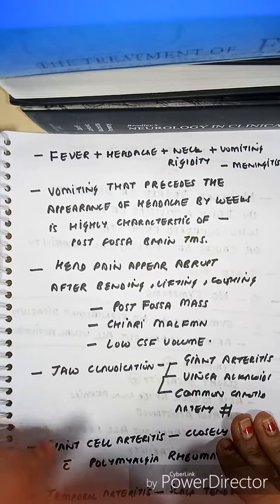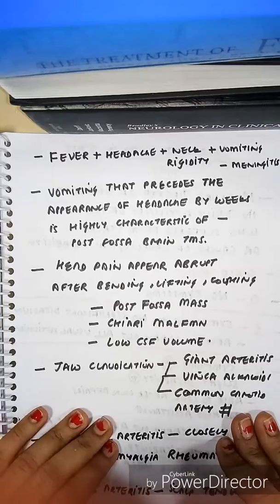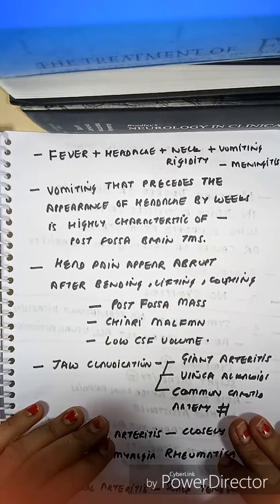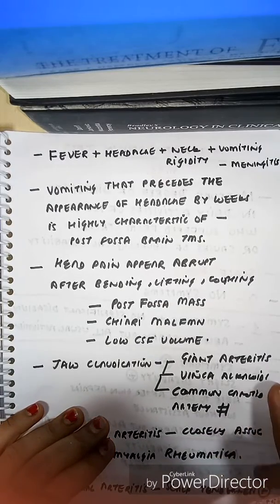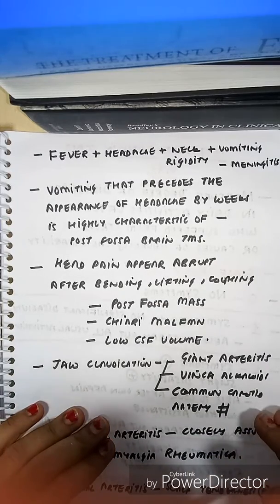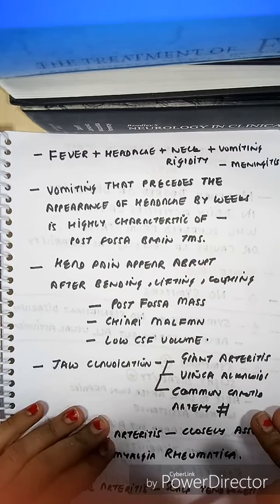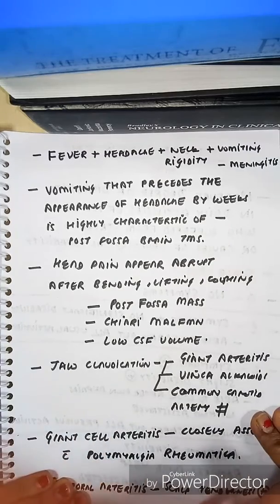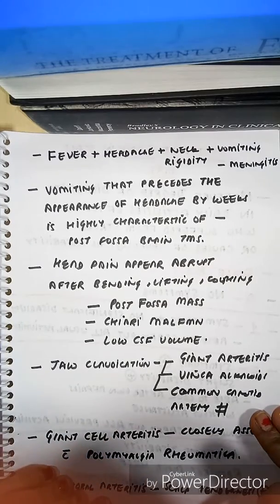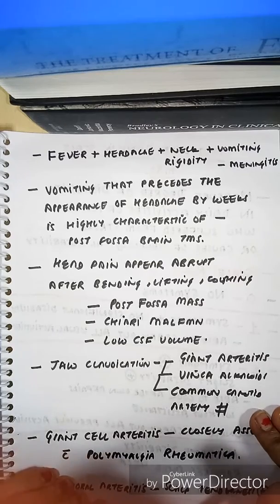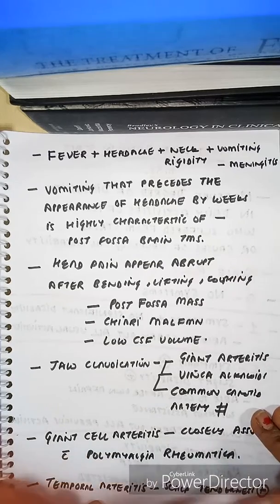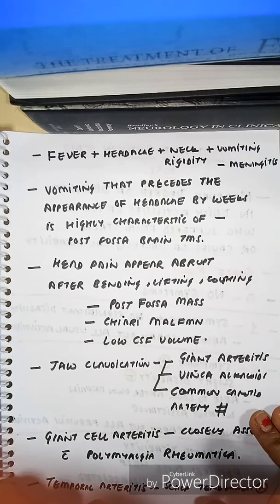One cause of jaw claudication is giant cell arteritis, but other causes include vinca alkaloids and common carotid artery blockage. Giant cell arteritis is associated with polymyalgia rheumatica, and in temporal arteritis, scalp tenderness is present.